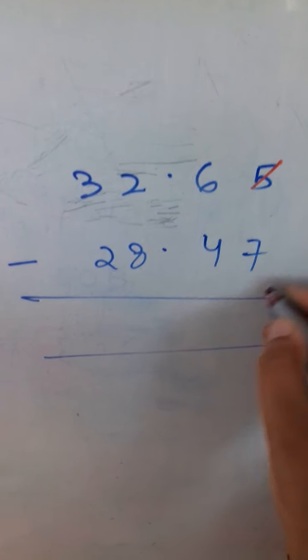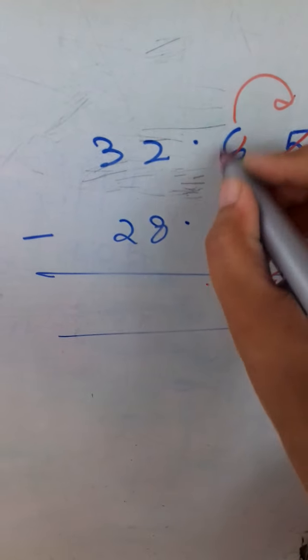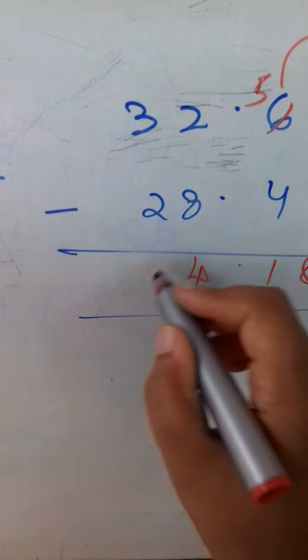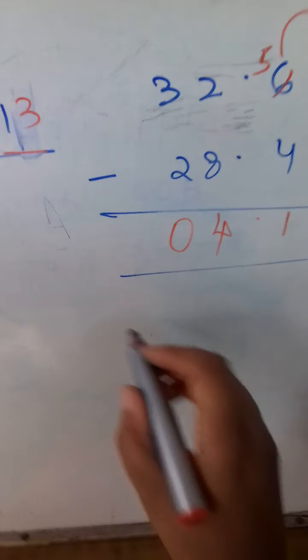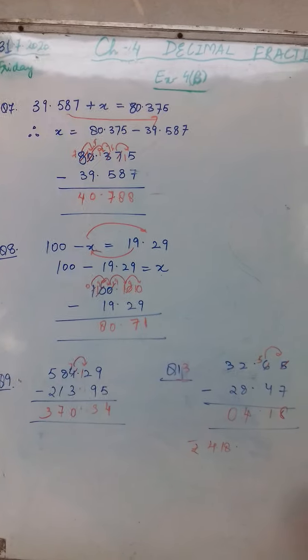Again 15 minus 7 is 8. 5 minus 4 is 1. You know how, because this has given to this. So 12 minus 8 is 4, and 2 minus 2 is 0. So rupees 4.18 has increased. I hope you got these questions. Please copy it down. I'll see you later. Thank you.